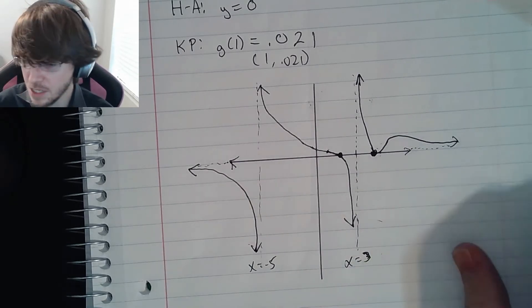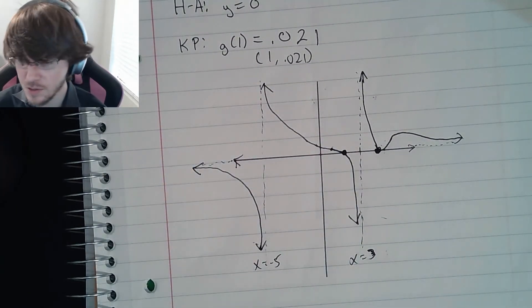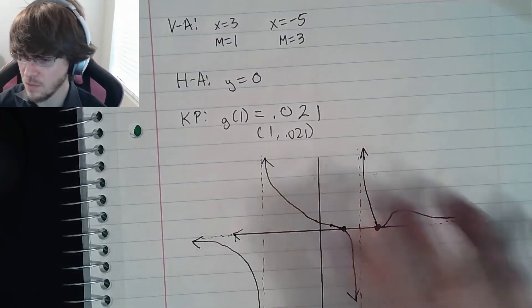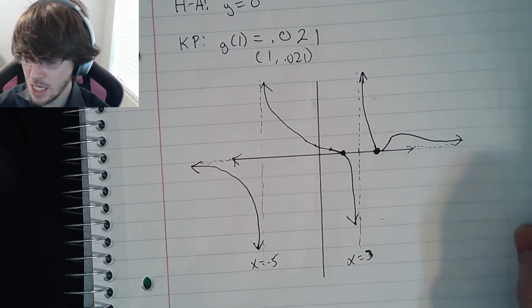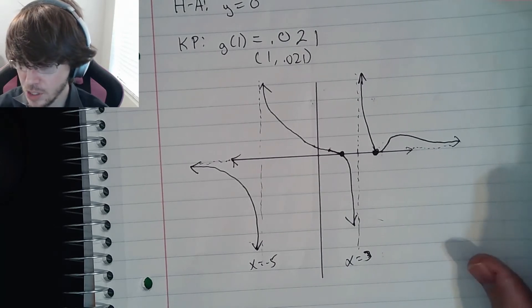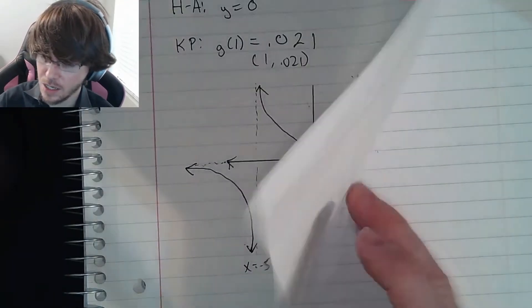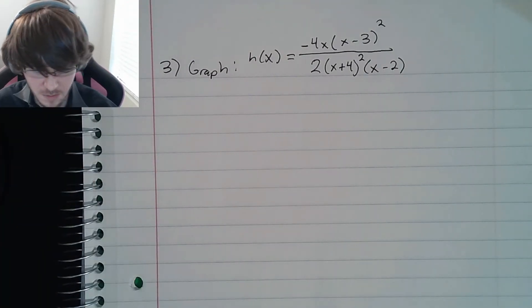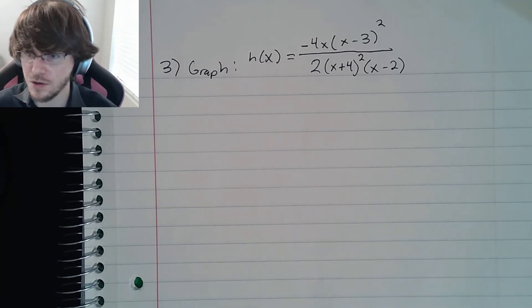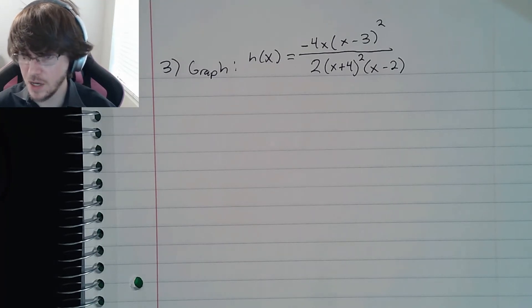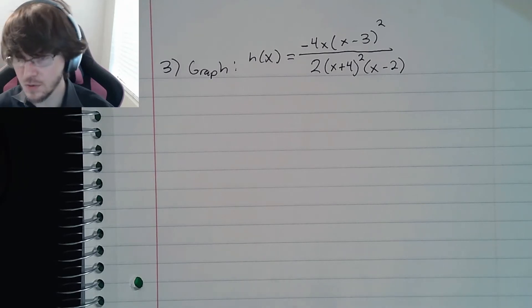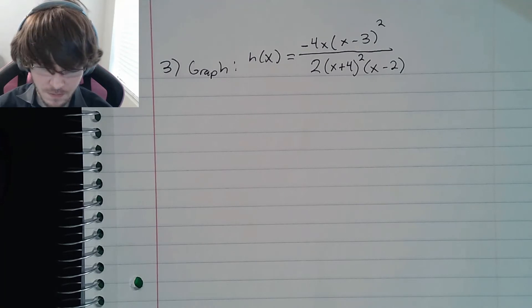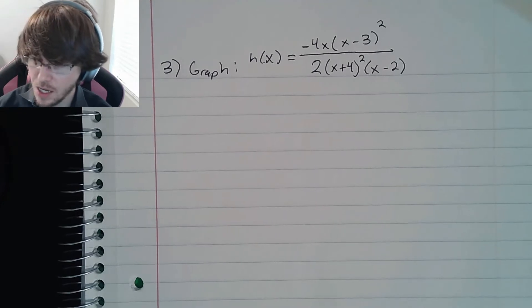If you have not taken a break you really should — it's been 35 minutes. In a regular class you would have had time to move around, talk to a friend, check your phone, go to the bathroom. For problem three, you've had some practice now. I recommend doing it in two parts: first find all zeros, asymptotes, end behavior, and key point on your own, then check with mine; then do the graph and check again.